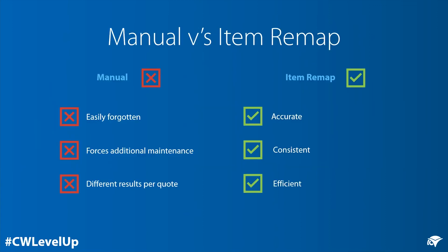Updating details like this is easily forgotten, takes additional time, and can produce different results per quote if done manually. Whereas item remaps help to prevent common mistakes and improve accuracy, productivity, and efficiency.